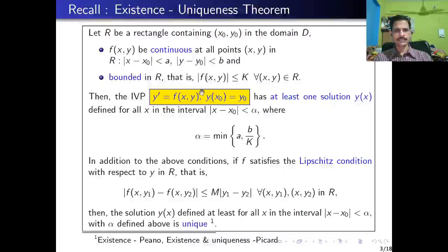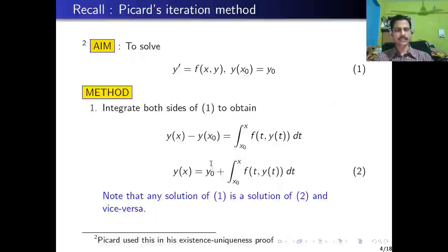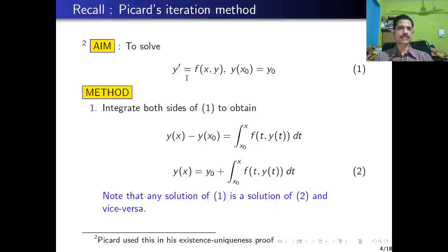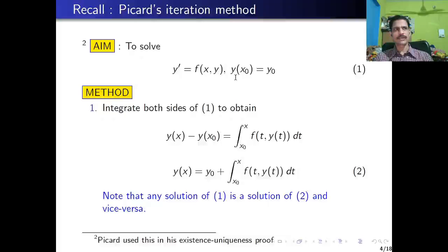This existence condition was given by Peano, and the existence-uniqueness was given by Picard. In fact, Picard's existence-uniqueness result is based on Picard's iteration method. To recall from the previous lecture, we again solve the initial value problem for the first-order ODE: y' = f(x, y) with initial condition y(x₀) = y₀, through an iteration.